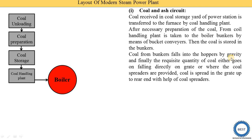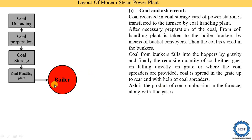Coal from the bunkers falls into the hopper by gravity. From the hopper, coal is supplied to the furnace by gravity. The requisite quantity of coal then falls directly onto a grate. The grate is the location on which the combustion of coal is carried out — it is a type of grill on which coal is placed and combustion occurs. After combustion is complete, some products are left, which are called ash.